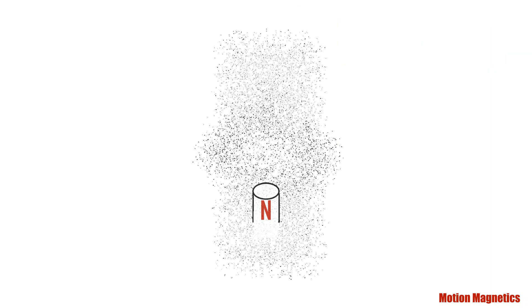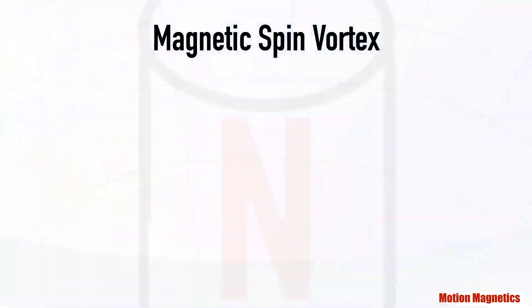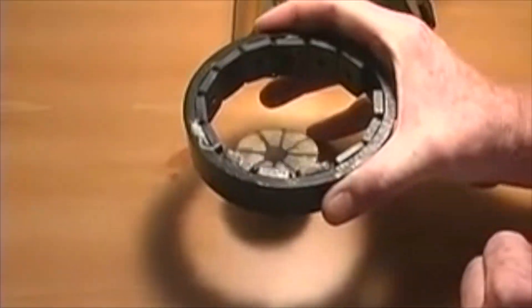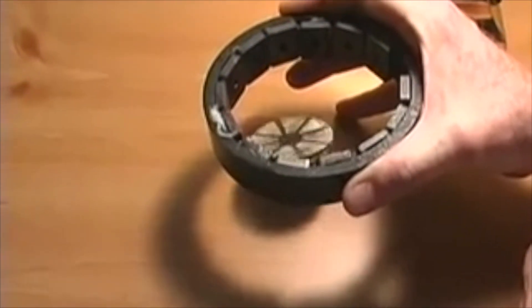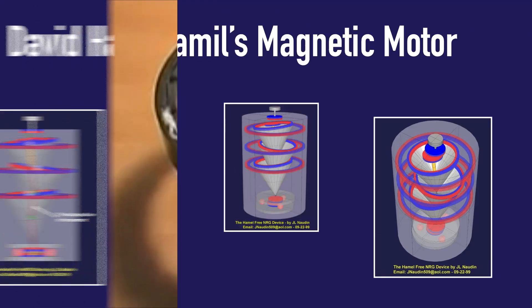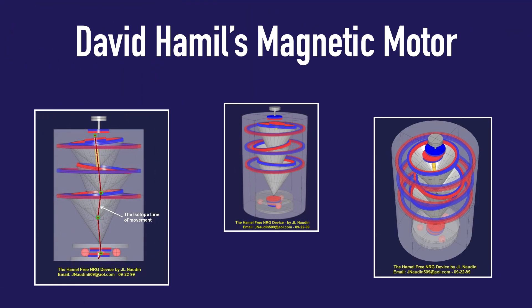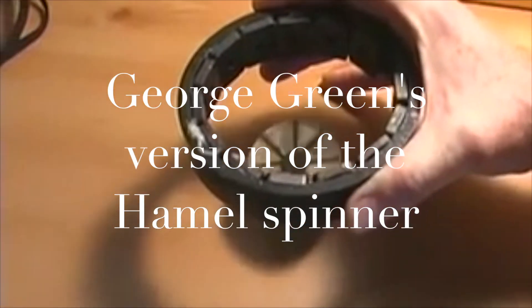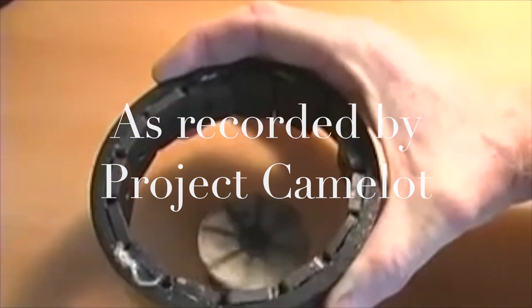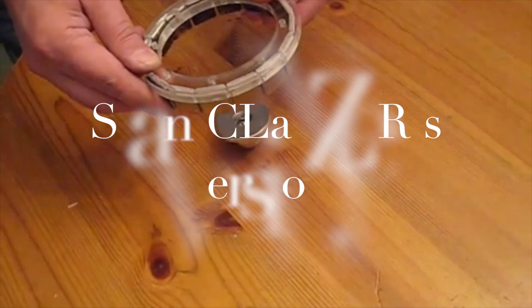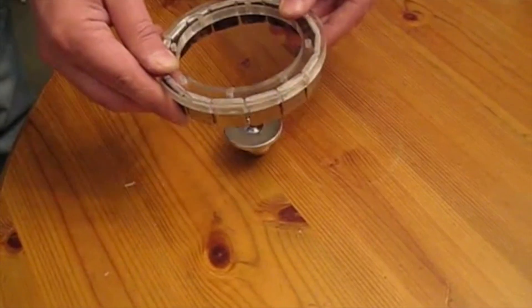The idea of tapping the magnetic spin vortex for a closed-loop system has been around for a while. Before I present some ideas on how this might be done, let me show you some ways it can't, and also share an interesting design idea by David Hamill. Hamill's magnetic motor utilizes the magnetic spin vortex and gravity in his design. People have been trying to oversimplify his design into something like this, which has been called the Hamill spinner. The first one I saw was presented by George Green and Project Camelot. If you really study the simplified design, it's actually not making use of the spin vortex, which I'll explain in a moment.